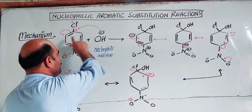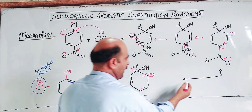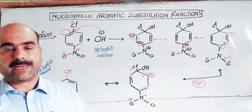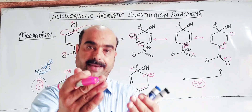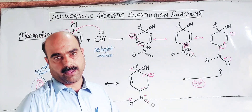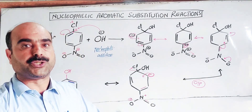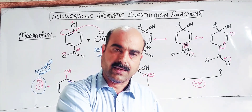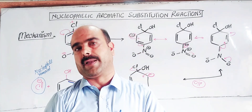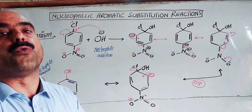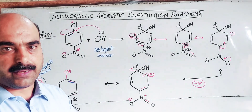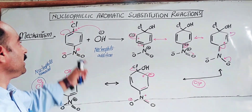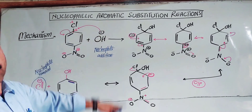There are ortho and para positions involved. The strong electron-withdrawing group on benzene is connected at the ortho and para positions. If connected at these positions, the negative charge created by the nucleophile addition is stabilized. These are the key points about nucleophilic aromatic substitution reactions of benzene.